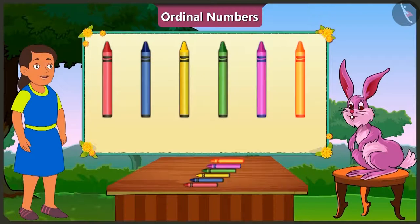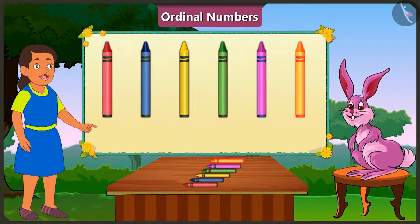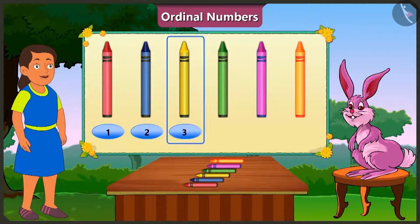Bubbly, can you tell me the position of the yellow crayon? Look Bunny, 1, 2, 3. The yellow crayon is at the third place.